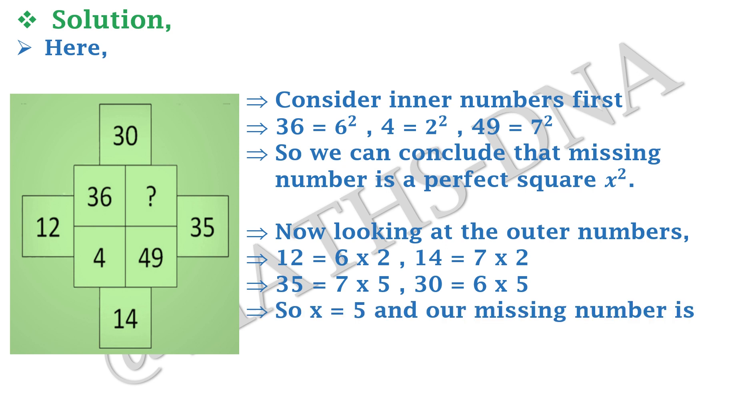So the x will be 5 and our missing number will be 25, that is 5 square, and hence the correct answer is option B. Thank you.